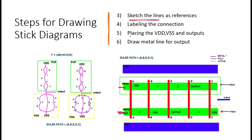Now that you have your reference lines, it's time to label the connections. This step involves identifying where transistors share connections, like between the source and drain. Label each point in the circuit where two or more transistors are connected. For our example, we follow the Euler path — our decided path was A to B to E to D to C — so we label our inputs accordingly: A, B, E, D, C. This makes connections easier and wiring less complex.